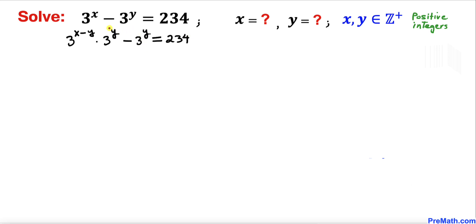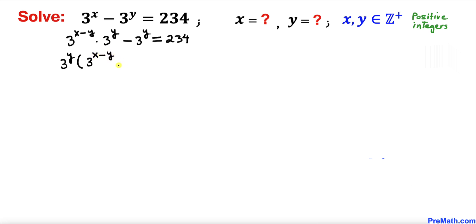We can see that 3^y is common throughout, so we can factor it out. Factoring 3^y outside gives us 3^y times (3^(x-y) minus 1) equals 234.